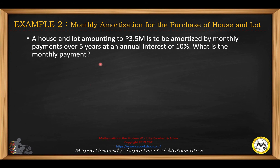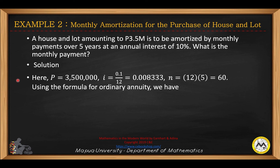Let's have an example on amortization — how to compute the amortization for the purchase of a house and lot. A house and lot amounting to 3.5 million is to be amortized by monthly payments over 5 years at an annual interest rate of 10%. What is the monthly payment? P is the present value, so we have 3.5 million. The annual interest rate J over M is 10% compounded monthly, which is 0.1 divided by 12, giving 0.008333. The total number of periods N is 12 times 5 years, so that will be 60 periods.